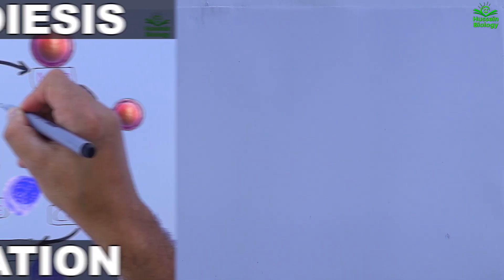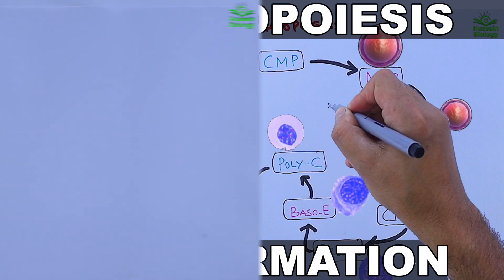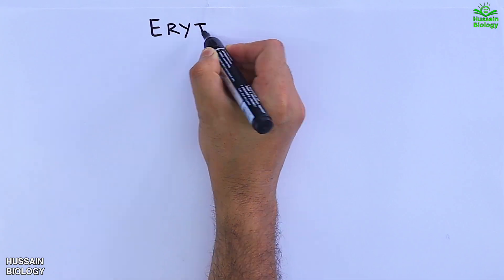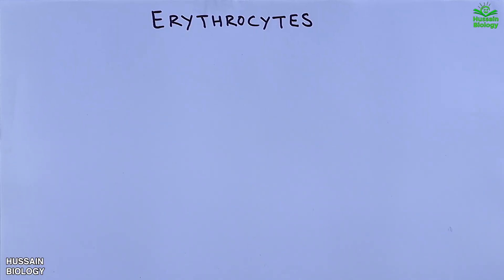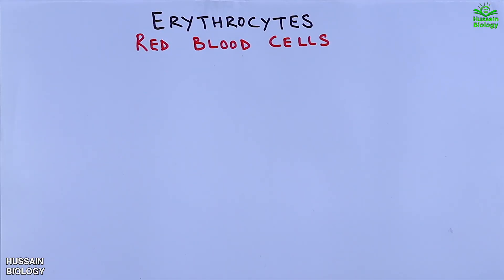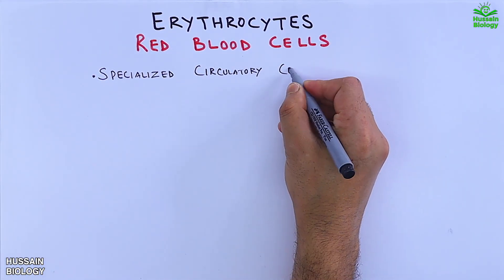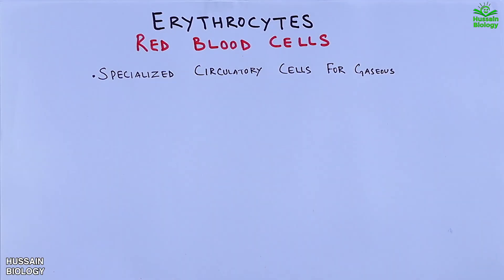In the previous video we discussed about erythropoiesis; if you want to watch that video first, the link is in the description. Now in this video we'll be discussing about erythrocytes, also known as red blood cells. These are specialized circulatory cells for gaseous transport.